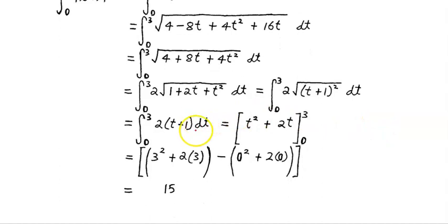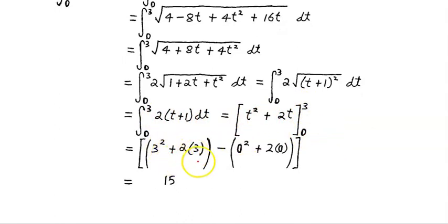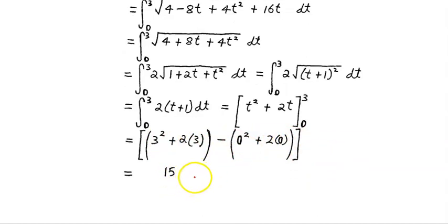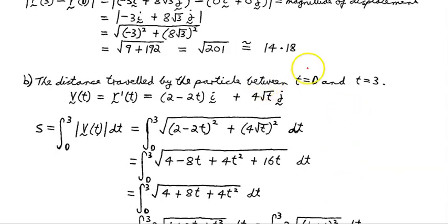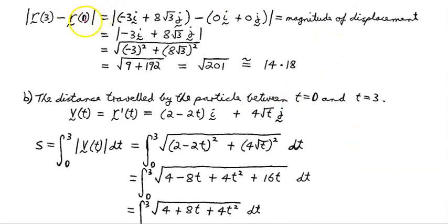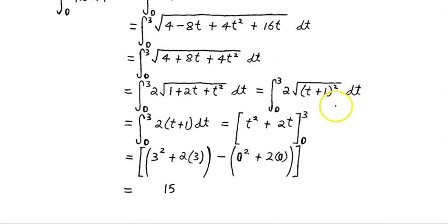That can be written as the integral from 0 to 3 of 2 times the square root of (t plus 1) squared dt, which then becomes 2 times (t plus 1) dt. Anti-differentiating: t squared on 2, times the 2 here cancels, so we have t squared plus 2t. Evaluating between t equals 3 and t equals 0: (3 squared plus 2 times 3) minus 0 equals 9 plus 6 equals 15. So the distance travelled by the particle is 15 units. Compare that to the straight-line displacement of approximately 14.18 units — showing that was an approximation and the actual distance travelled is 15 units.